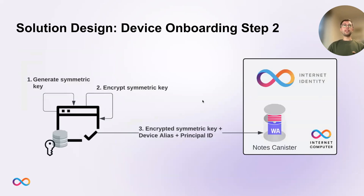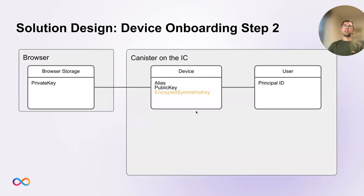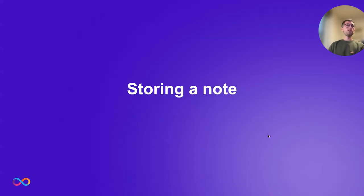In onboarding step two, still on the same authenticated browser, we generate the symmetric key, encrypt it with the public key generated in step one, and store all the information on the IC. The symmetric key is only sent to the IC in encrypted form, and the only entity able to retrieve it is this browser, which holds the correct private key. Our first device is now fully onboarded with all keys in place to start storing notes.